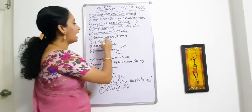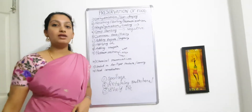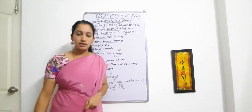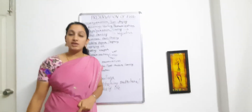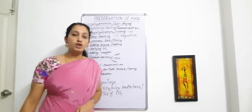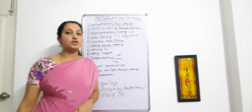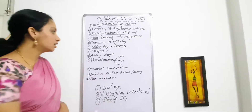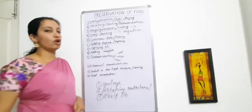Next is adding sugar, or the sugaring method. Sugar is also considered one of the preservatives and is easy to use as a preservative to prevent the growth of microorganisms.